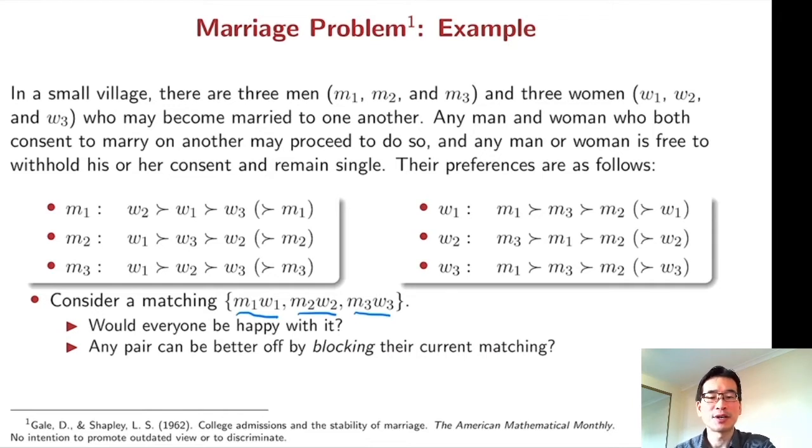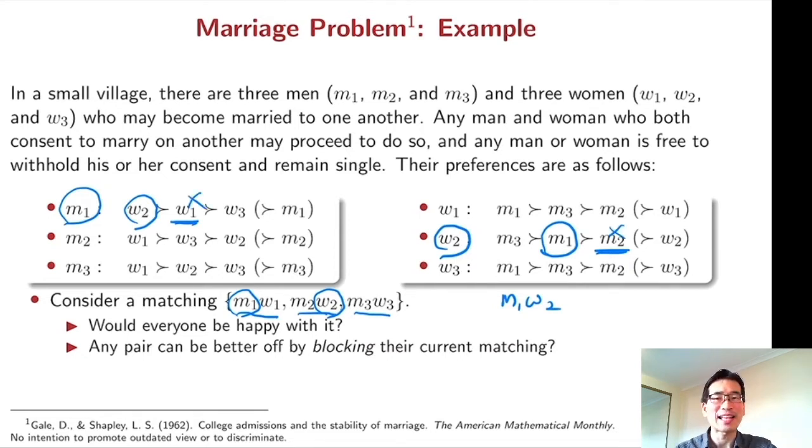For instance, look at M1 and W2. M1 prefers W2 over his current partner W1. W2 also prefers M1 over her current partner M2. That means both M1 and W2 can be better off by getting married to each other instead of their current partners. So this current matching is not stable.